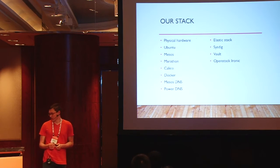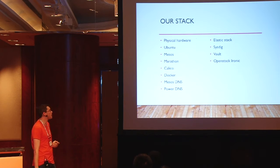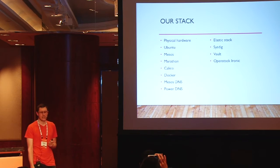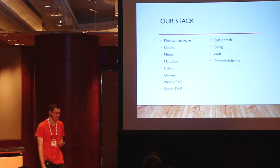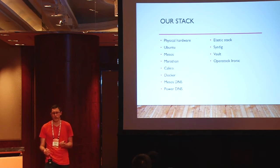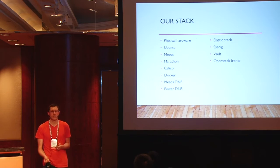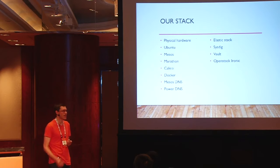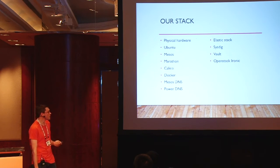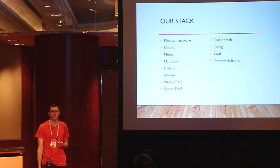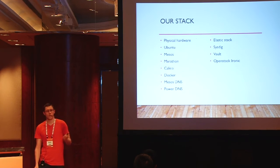A quick overview of our stack: we're running Ubuntu on physical hardware, Mesos, Marathon for microservices, and Calico for networking. Calico gives each workload its own IP without tunneling or VXLAN — it uses layer-three routing, turning each physical server into a router and using BGP to propagate routes. That's the same technology as standard data centers, making it easy to understand and debug. We use Docker as a containerizer, Mesos DNS for dynamic DNS, PowerDNS for static DNS, the Elastic Stack for logging, Sysdig for monitoring, HashiCorp Vault for secrets management, and OpenStack Ironic to deploy our physical machines.